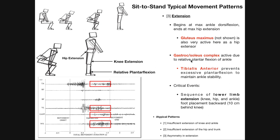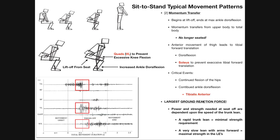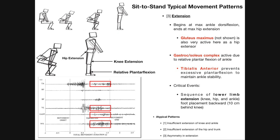Regarding the plantar flexion: we don't want the tibia moving too far backward, so we need to restrain and control that movement. The tibialis anterior contracts eccentrically to prevent excessive plantar flexion and maintain ankle stability. This is the exact opposite of the dorsiflexion phase: there, the tibialis anterior produced dorsiflexion while the soleus controlled it eccentrically; here, the gastrocnemius and soleus produce plantar flexion while the tibialis anterior controls it eccentrically. The extension phase ends when we are fully erect.